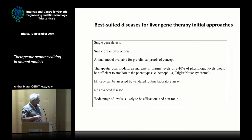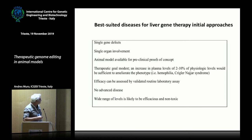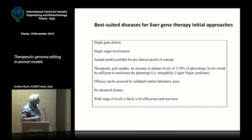Not all diseases are suited for this type of therapy. We need a disease caused by a single gene, and single organ involvement is much easier because we target only that organ. The availability of animal models is really essential to set up these technologies. And since we are still at the beginning of the genome editing era, we are not so efficient at getting very high levels of correction, so we need a disease requiring relatively low levels of expression.